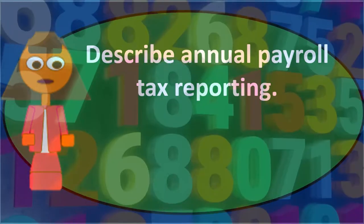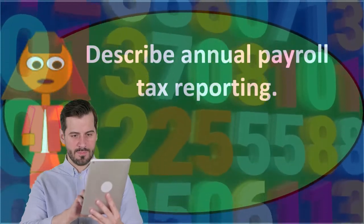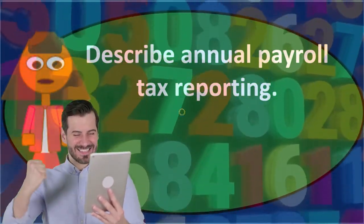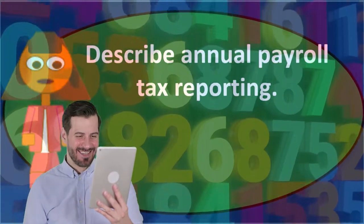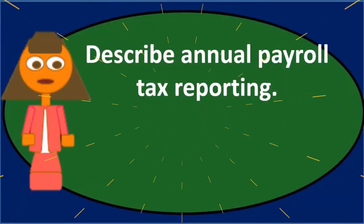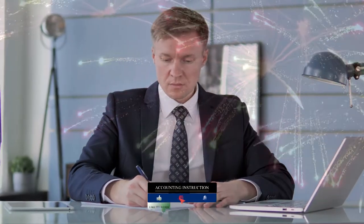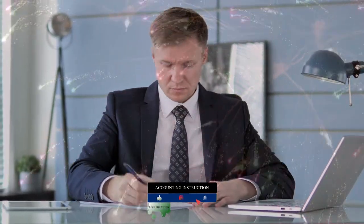We can also think of the W-2s and W-3s as annual forms, but those are the confusing ones. You might think that the 940, being a lower number than 941, would be done before the 941s — but that's not the case. We do the 941s first and then we do the 940 at the end of the year.